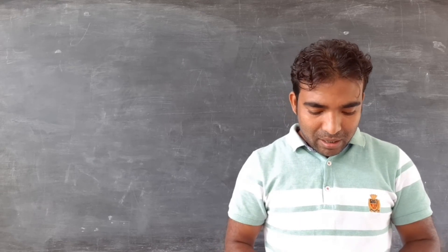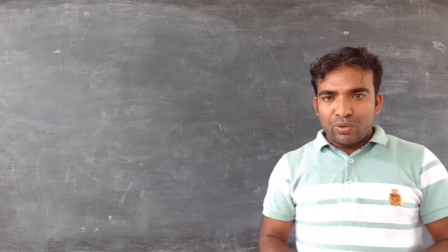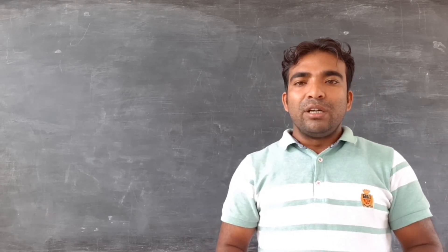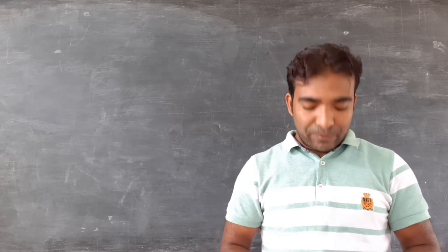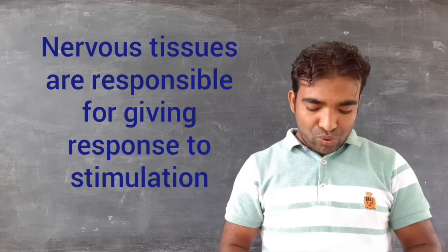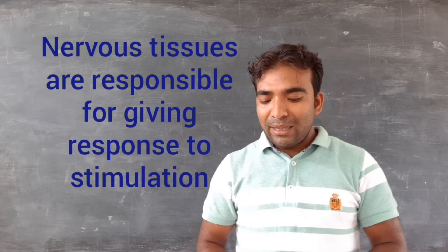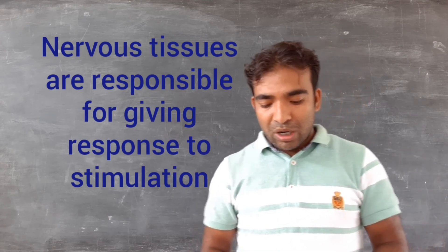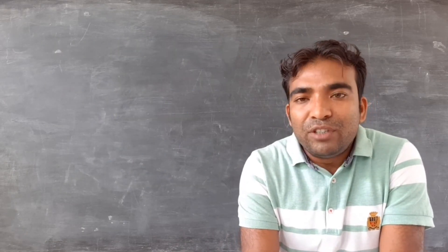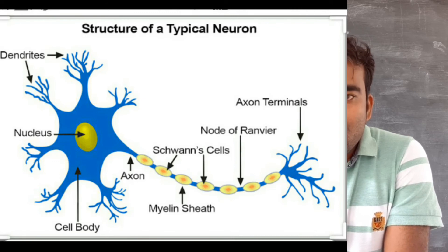The last type is nervous tissue. All the cells possess the ability to give a response in case of stimuli - any type of stimuli. This is because of the nervous tissue. The brain, spinal cord, and nerve cells are composed of this nervous tissue, and the cells of this tissue are called nerve cells or neurons.